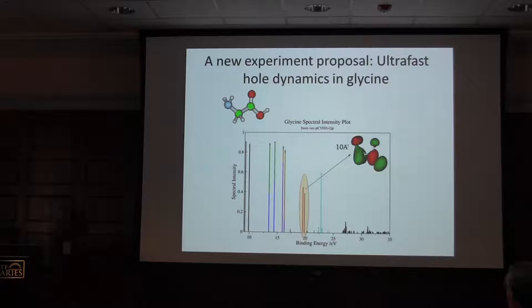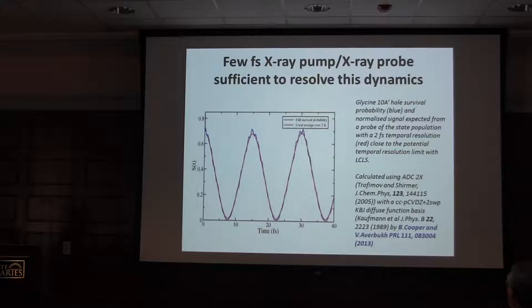We can do calculations on it, along with Bridget Cooper and Vitaly Averbukh. If you, in a valence ionization, ionize this, there's a state in the cation of about 20 electron volts called the 10A' state, which has character of a one-hole excitation but also coupled to a two-hole one-particle excitation, which is essentially not accessible to any photon coupling. So it's like a dark state in a sense. Your hole survival probability is modulated then by the oscillations, driven by electron correlations, between those two degenerate or near-degenerate states.